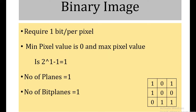The first type is the binary image. Only one bit is required to represent a single pixel, meaning we require one bit per pixel. The minimum pixel value in a binary image is 0, and the maximum pixel value is calculated as 2 raised to 1 minus 1, which equals 1. The total number of planes in a binary image is 1, and the number of bit planes is also 1.